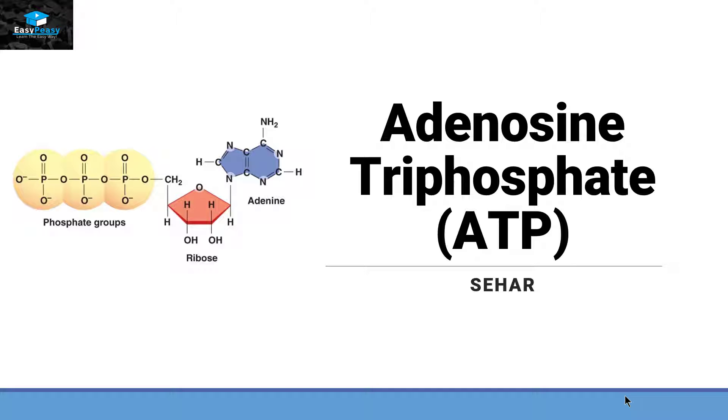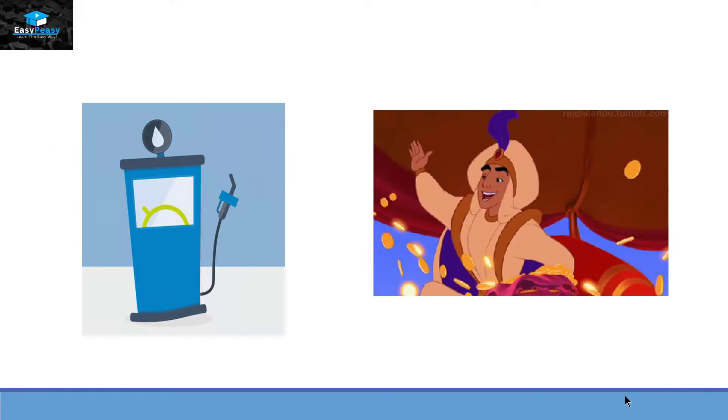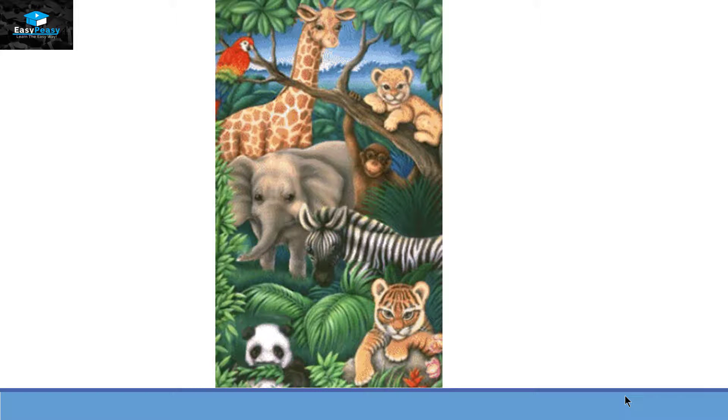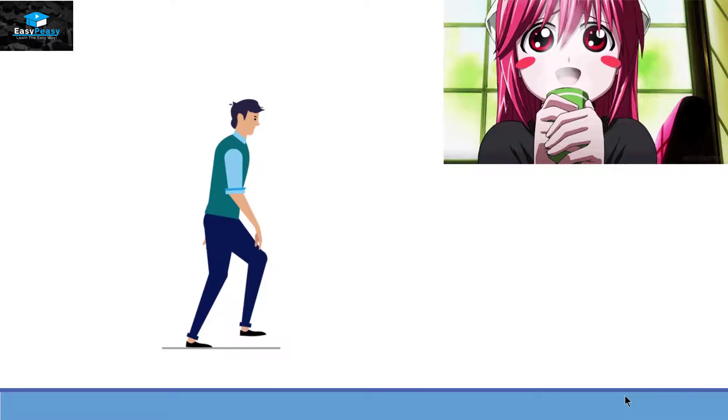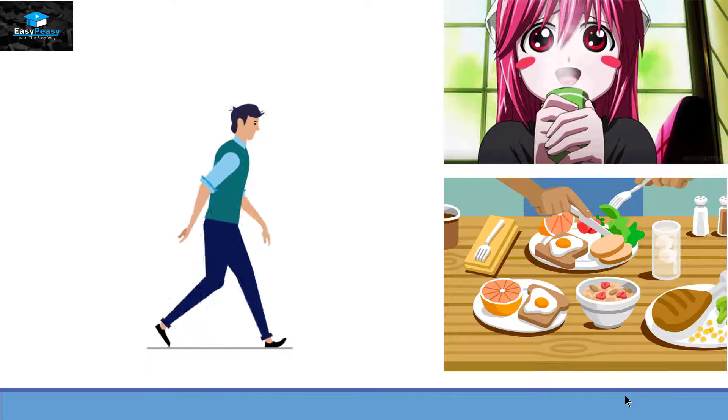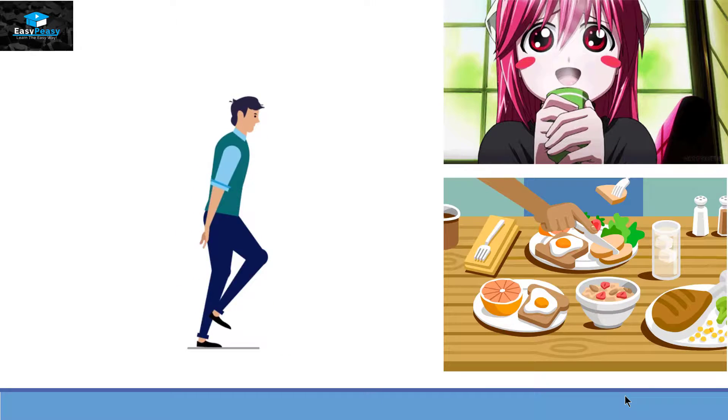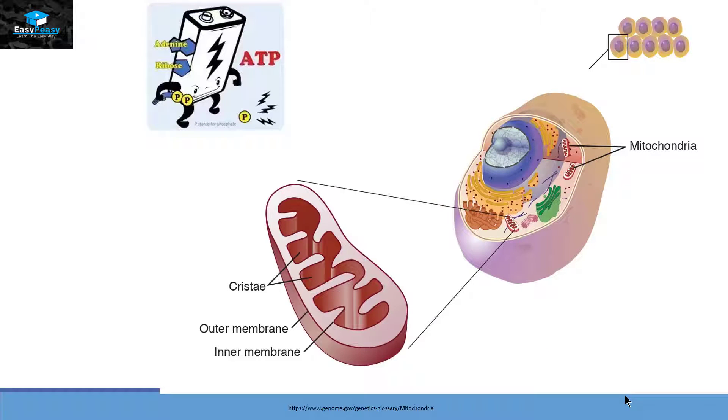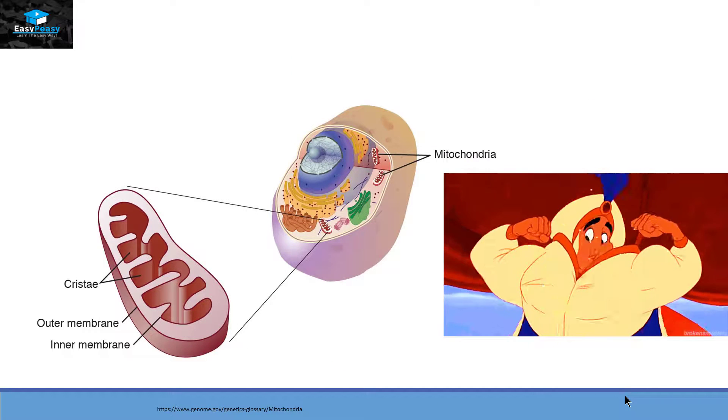Adenosine Triphosphate is also called the energy currency of living organisms and we require energy to walk, to drink or eat something and various other processes as well. And the organelle that is responsible for generating ATP is mitochondria. That's why mitochondria is also called the powerhouse of the cell.